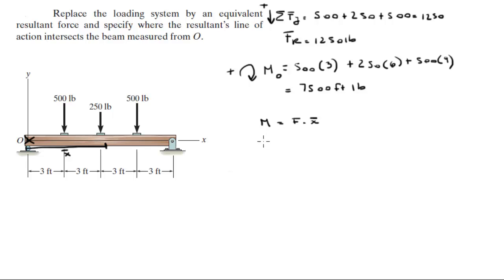So the moment is equal to 7500, the force is equal to 1250, and X is the unknown. To find this distance X, just divide 7500 by 1250, and you get that the distance is equal to 6 feet.